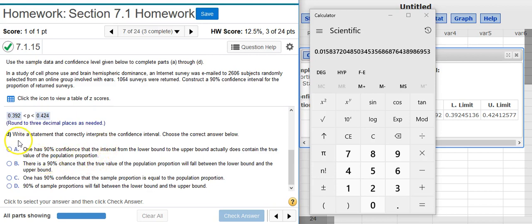Okay, part D says, write a statement that correctly interprets the confidence interval. Choose the correct answer below. Confidence interval is simply a range of values. And what we're trying to do is figure out what is the true value of the population parameter. So when we make a confidence interval, we're saying that we have a certain level of confidence that the true value of the population parameter is between the upper and lower limits.